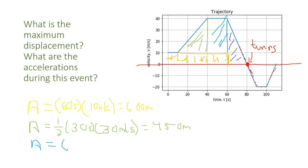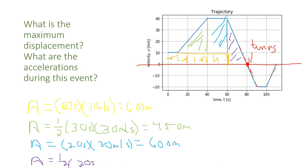Let's go to the light blue area. This is a rectangle, so we have 20 seconds as the length and a height of 30 meters per second, which gives us 600 meters. Now the purple area is another triangle: one-half base times height, so one-half times a base of 20 seconds and a height of 40 meters per second, which gives us an area of 400 meters. These are all positive.